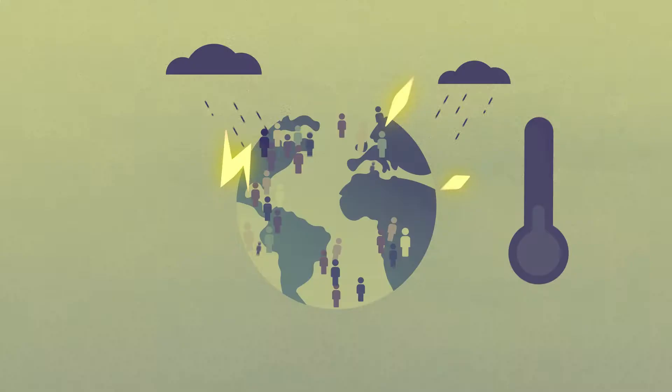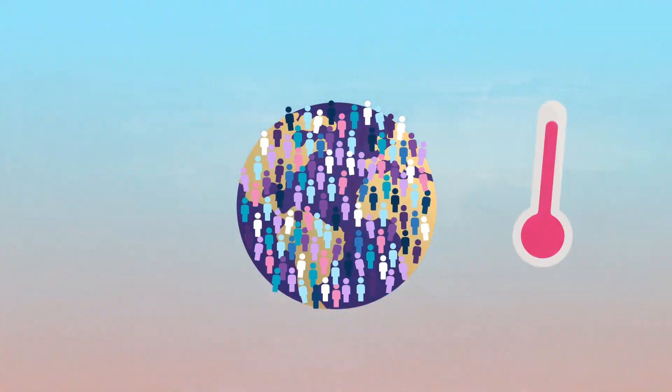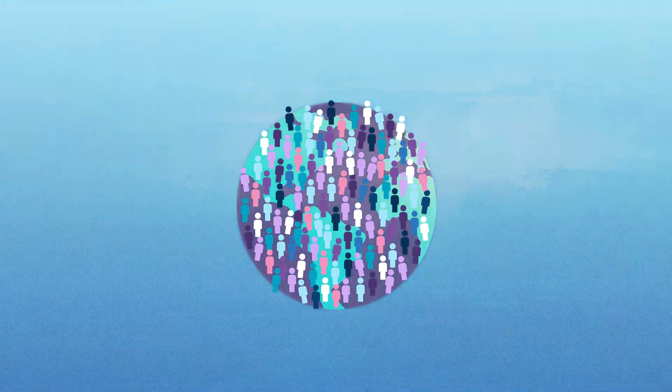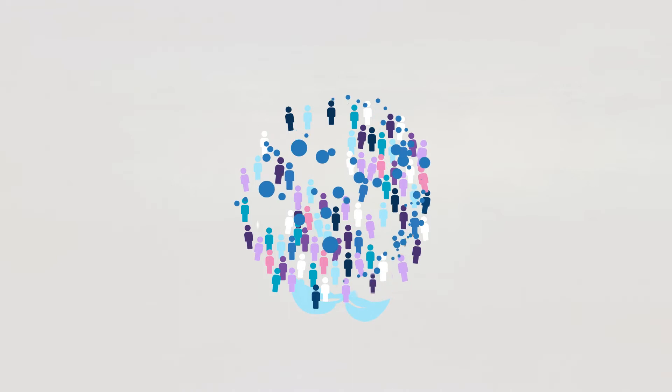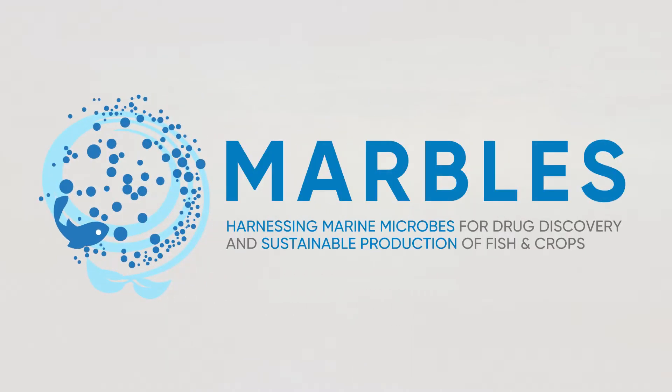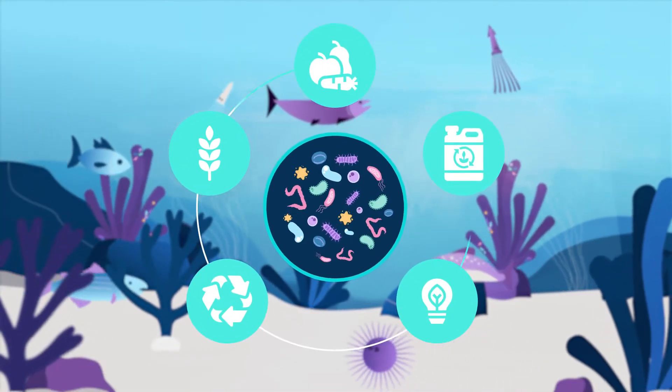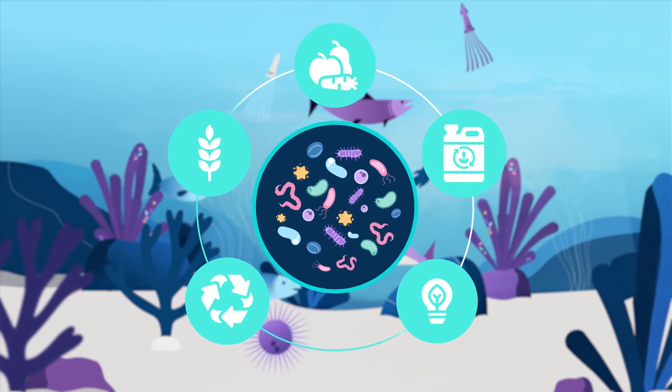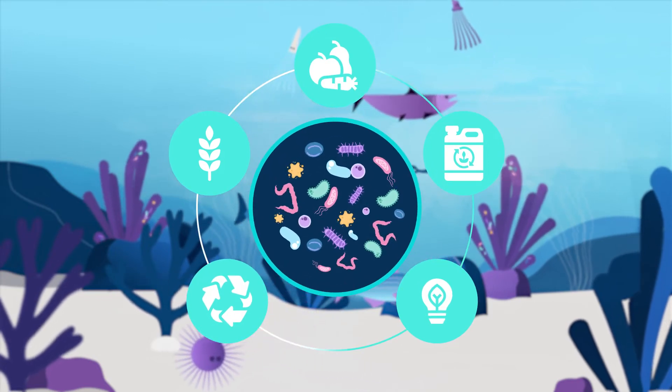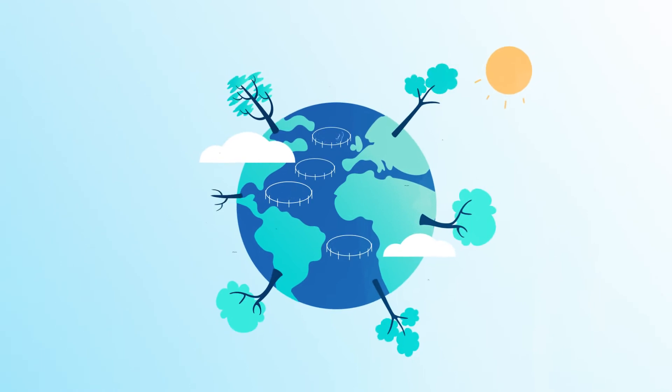The world is facing a growing population and climate and biodiversity crises. In this context, the MARBLES project is harnessing the power of marine microbiomes to find solutions to the challenges these crises bring. The project will create eco-friendly alternatives to the synthetic chemicals currently used in pharmaceuticals, agriculture and aquaculture. The natural products created will make fish production more efficient and will support more sustainable crop production.